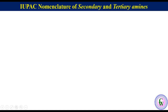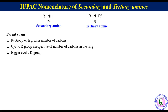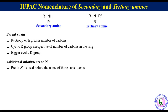Now we will discuss IUPAC naming of secondary and tertiary amines. These are the general structures of secondary and tertiary amines, which have more than one R group. In these cases, the parent chain is the R group with the greater number of carbon atoms. If there are cyclic and acyclic R groups, then irrespective of the number of carbon atoms in the ring, the cyclic R group is the parent chain. If there are more than one cyclic R groups, the bigger cyclic R group is the parent ring. For additional substituents on the nitrogen — the R groups other than the parent chain — the prefix N in italic is used before the name of those substituents.